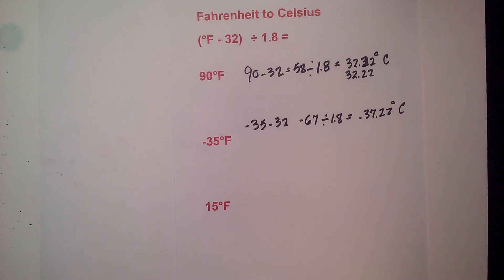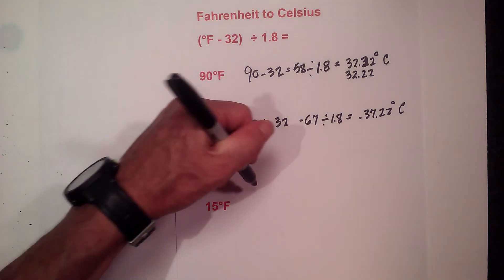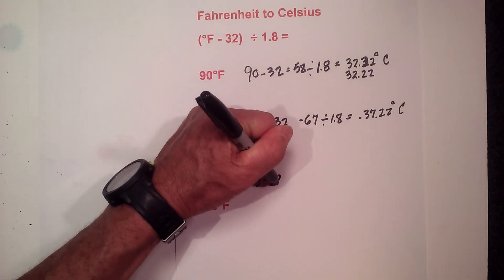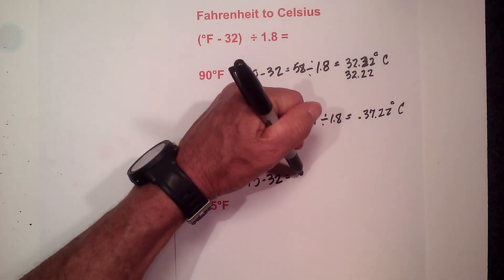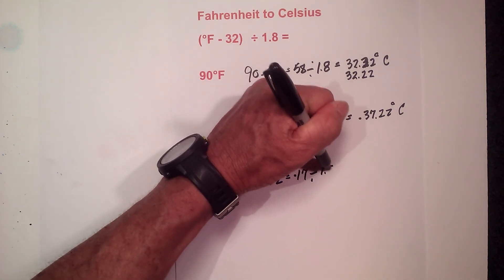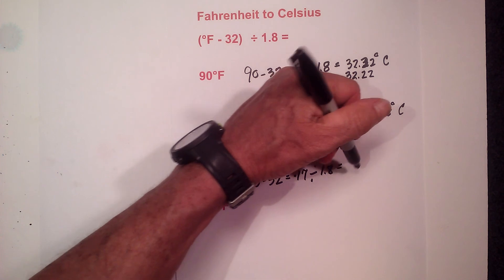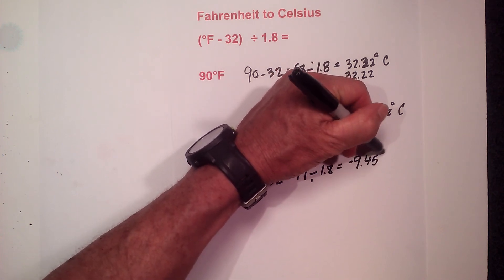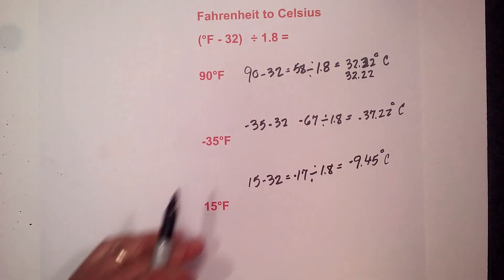Okay and finally we have 15 degrees. So let's go 15 minus 32 equals a negative 17. Divide negative 17 by 1.8 and that is going to equal a negative 9.45 degrees Celsius.